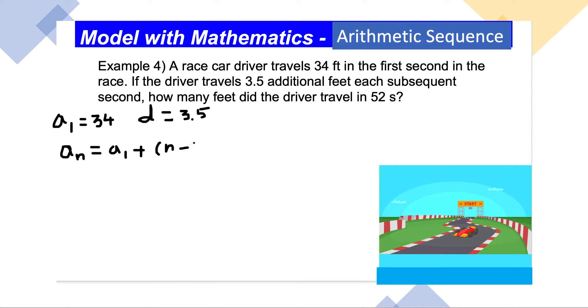This is the explicit definition for arithmetic sequences times d. Now we have all the elements. We want to know the term where n = 52 because we want to know the 52nd term.